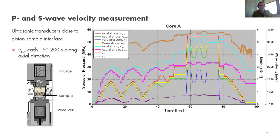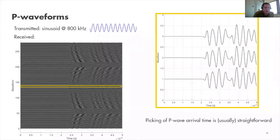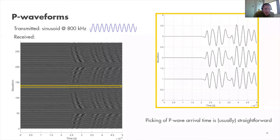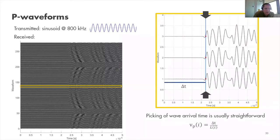For waveform picking: we transmit an 800 kHz sinusoid through the plug, obtaining hundreds of waveforms per experiment. Zooming in, we highlight three waveforms and pick the arrival time — in this case the zero crossing. Using the proper calibrations and the sample length, we calculate the velocity at a certain point in the stress path. The pattern observed reflects the isotropic loading cycles.